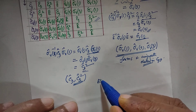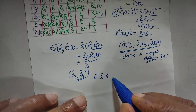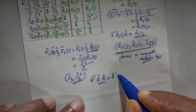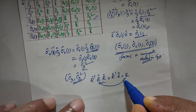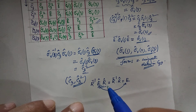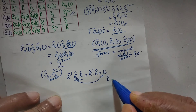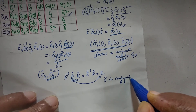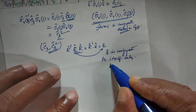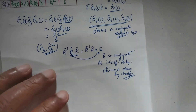What about the identity operator E? For any operator R, R inverse times E times R gives R inverse R, which is E. So E is conjugate to itself only. Whatever R you choose — whether C3 or sigma V or anything else — E transforms to itself only. Therefore, the E operator is conjugate to itself only, and E forms a conjugate class by itself.